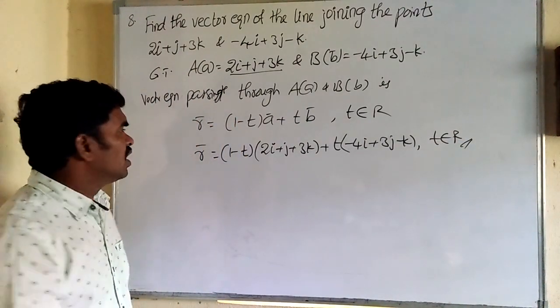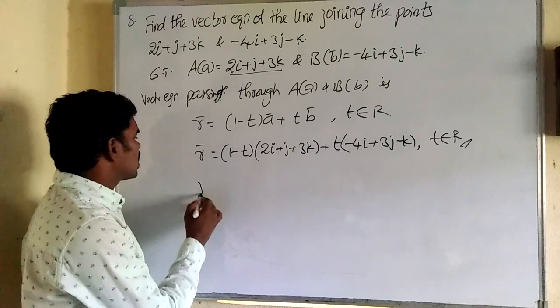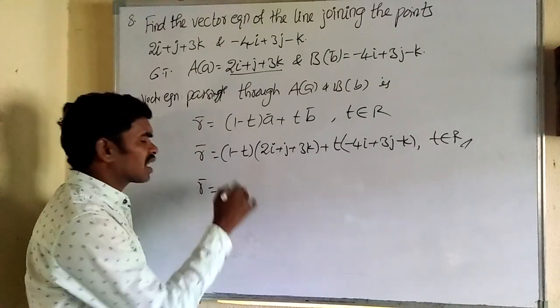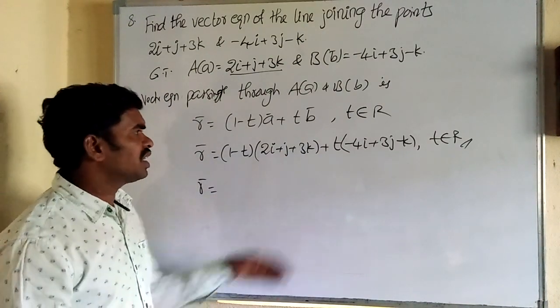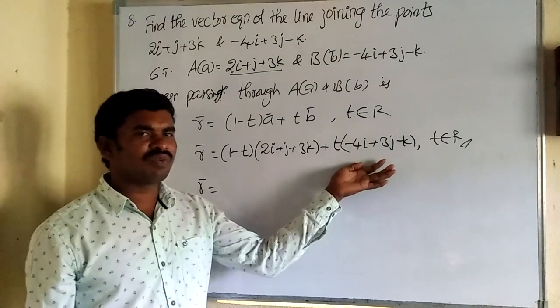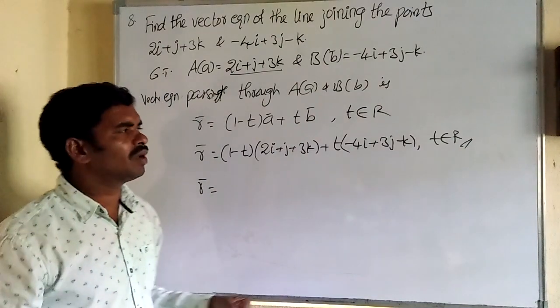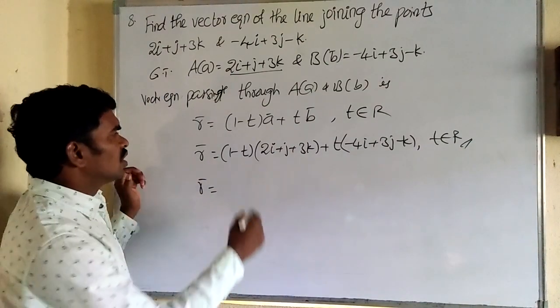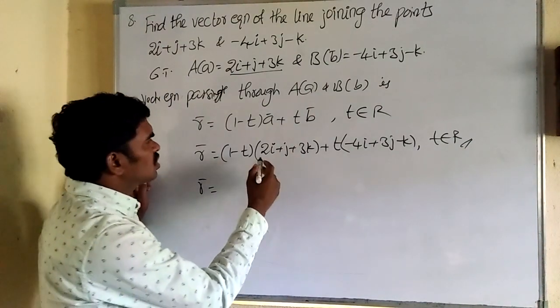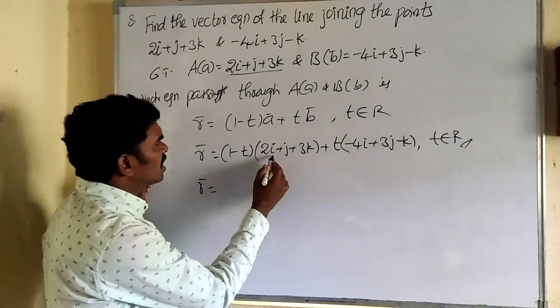So the final simplified form is r̄ = (2 − 6t)i + (1 + 2t)j + (3 − 4t)k, where t ∈ ℝ. If you write up to the substitution step, you will still be awarded the marks. The simplified form is extra but recommended.